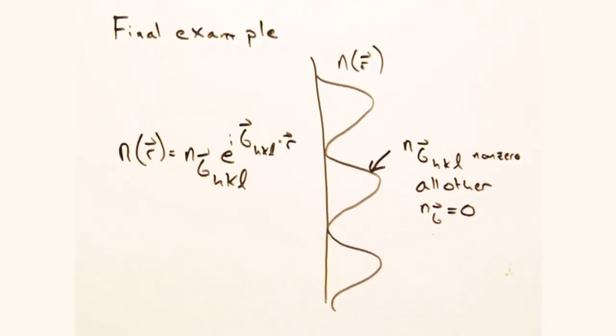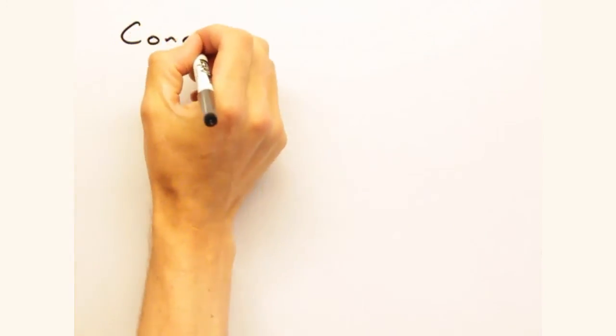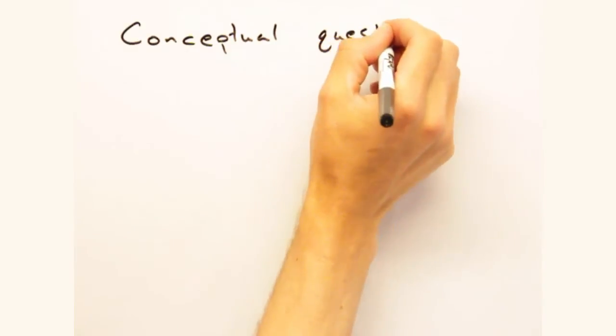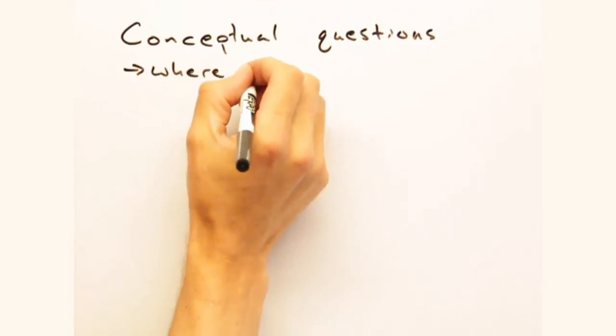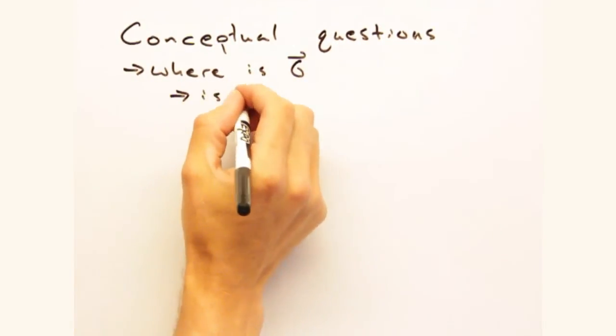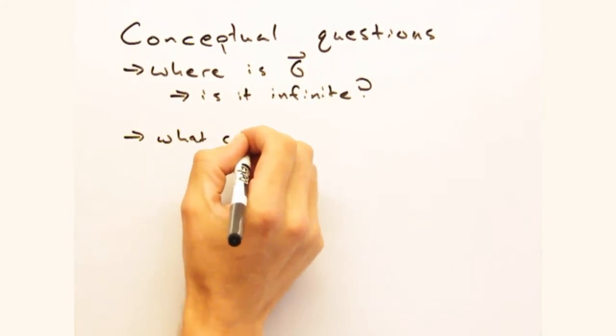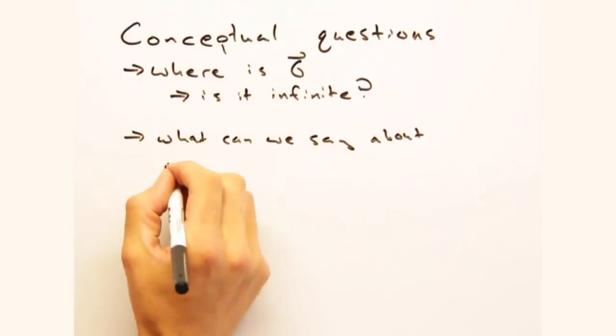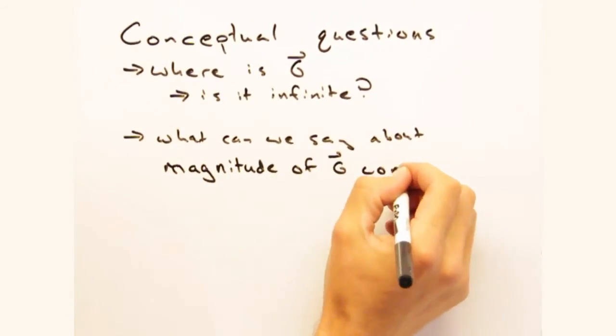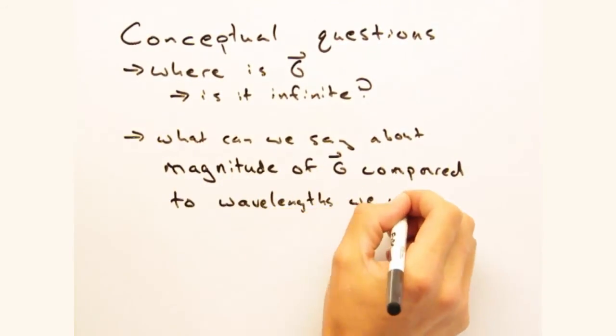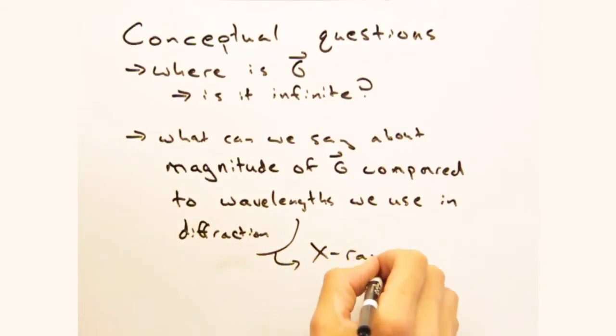We leave you today with some conceptual questions regarding Fourier space. First off, where does the space spanned by g exist, and is it infinite? Why or why not? It might help to think about its units. And second, because we've been talking about diffraction, what can we say about the magnitude of g compared to the wavelength that we diffract in our sample?